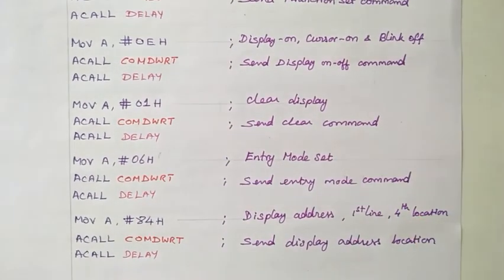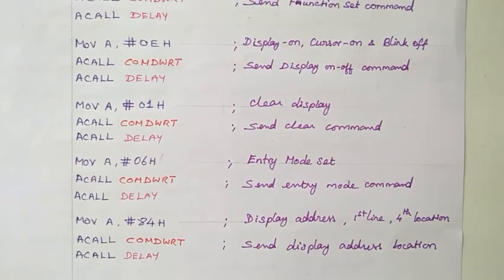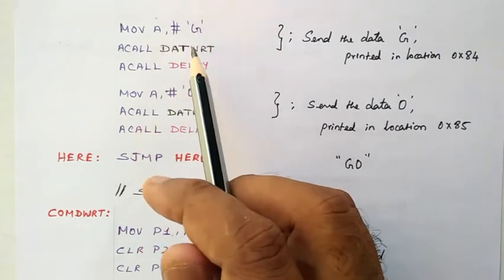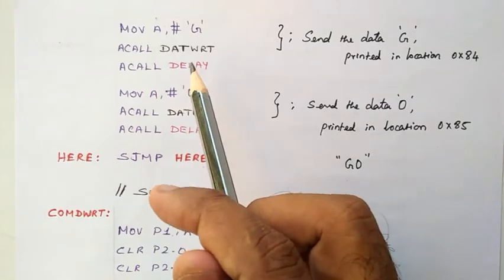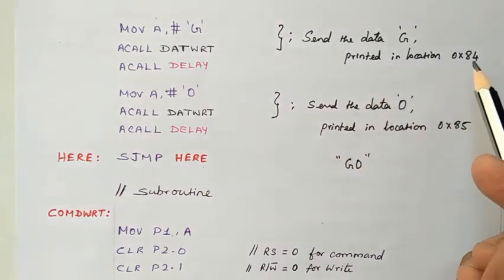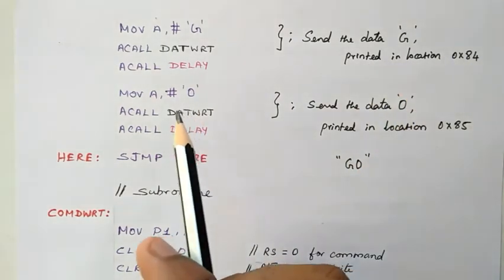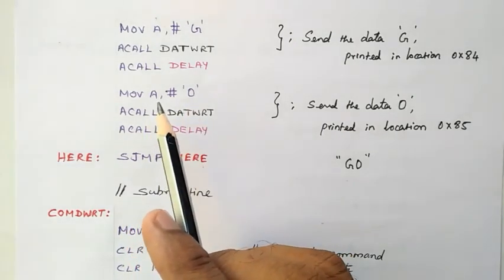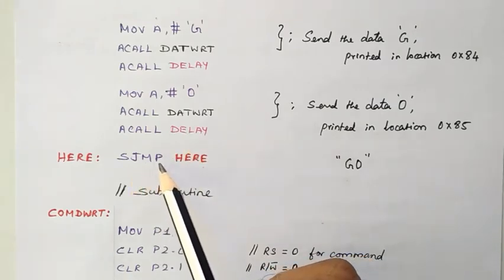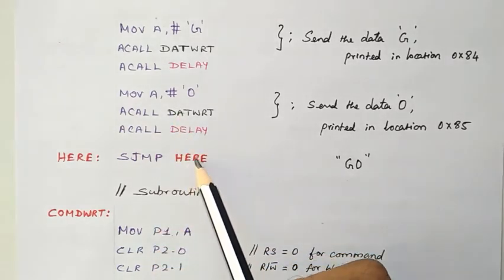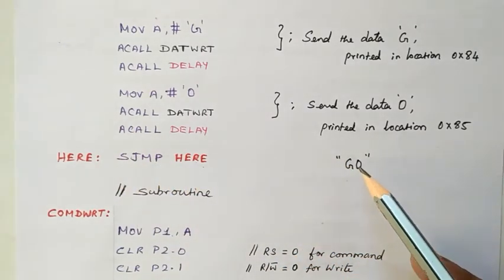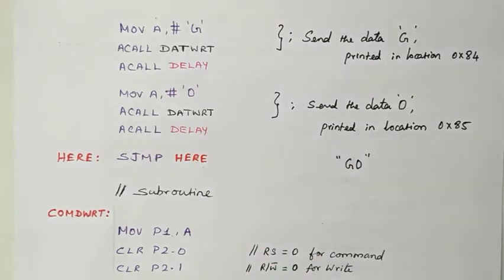That covers the initialization command codes. Now we look at the main task of the program. First we move character 'G' to the accumulator, then call the data write subroutine, and then call the delay program. This sends data 'G' to be printed at location 0x84, which was already given in the initialization code. Next we move the value 'O' to the accumulator, call the data write subroutine and delay routine. Finally a short jump instruction loops back, so the text 'GO' continuously appears in the LCD.